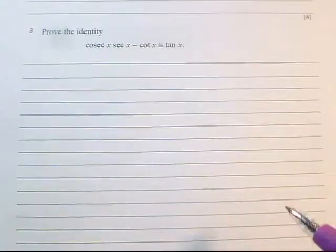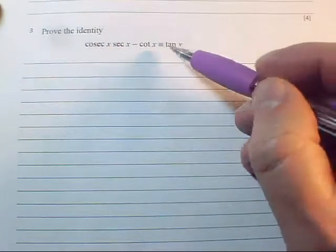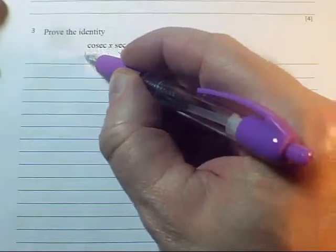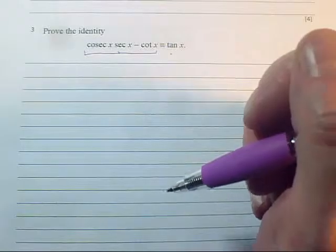Okay, this is an interesting one. We have got an identity. We've got a simple side and a complicated side. So the obvious thing to do is to start with the complicated side and try and simplify it because there's not going to be that many ways we can do it.